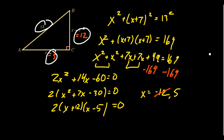So 5, 12, 13 is a Pythagorean triple: 5² + 12² = 13². Another very famous — probably the most famous — Pythagorean triple is 3, 4, 5. If you take 3² + 4², that equals 5². Therefore, there exists a right triangle whose side lengths are 3, 4, and 5 respectively.